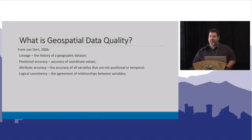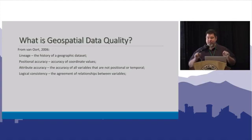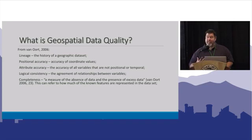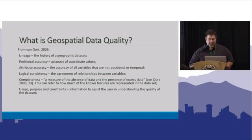I once downloaded a database of Starbucks locations. Sometimes they labeled it 'Starbucks' with a capital S, sometimes lowercase, sometimes as two words, and my favorite was 'Starbucks' with dollar signs instead of the S's. So logical consistency is about how well we keep track of being consistent with our data. Then there's completeness — do we have all the data we need — and finally usage, purpose, and constraints: what's the purpose of the data, who can use it, and what are the limitations.